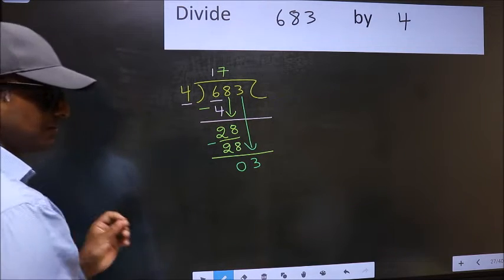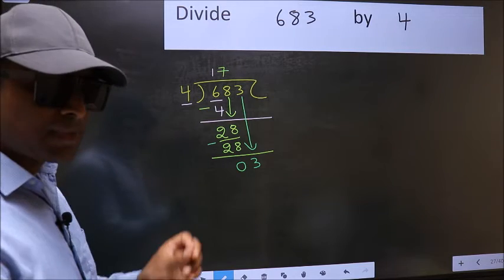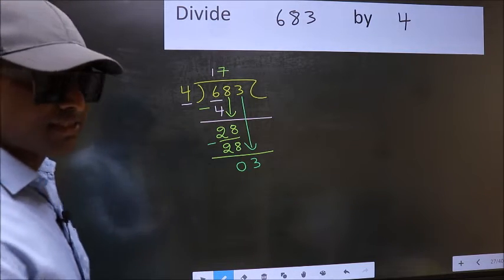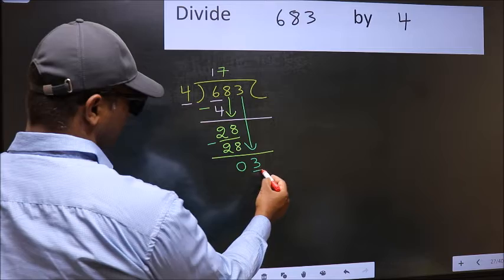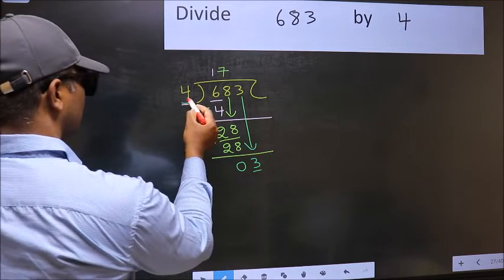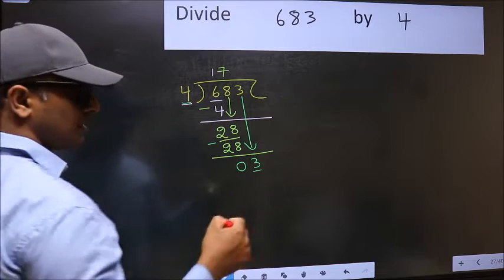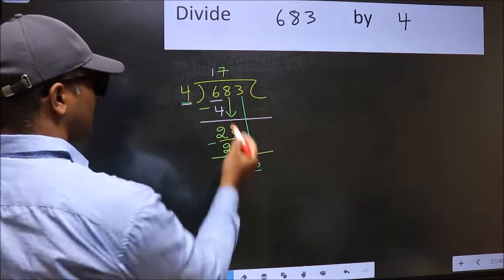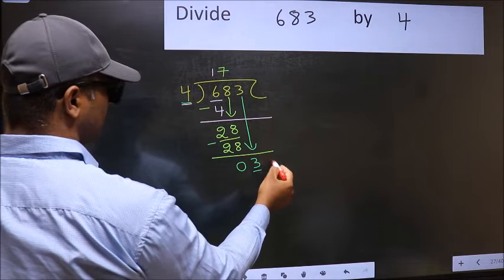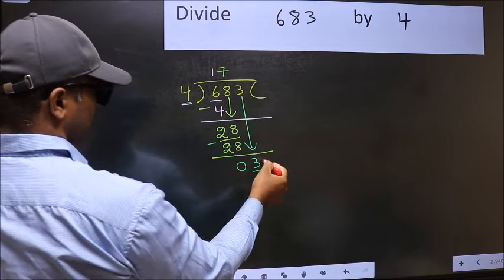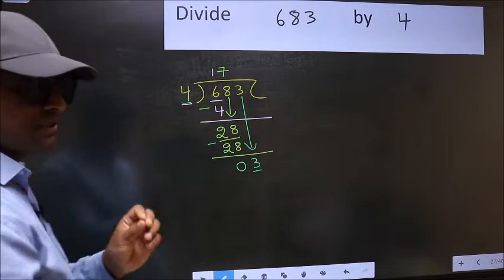After this step, the mistake happens. And the mistake is this: here we have 3, and here 4. 3 is smaller than 4. So what many do is they directly put a dot and take 0, which is wrong.